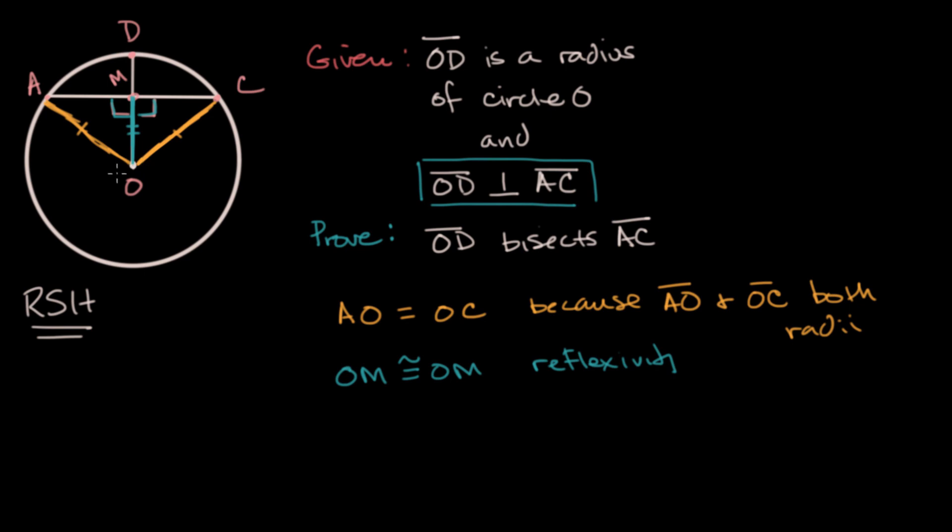And so what we could say is, let's just use RSH for now, but you could also say we can use the Pythagorean theorem to establish that AM is going to be congruent to MC. But let me just write it this way. I will write that triangle AMO is congruent to triangle CMO by RSH. And if the triangles are congruent, then the corresponding sides must be congruent.